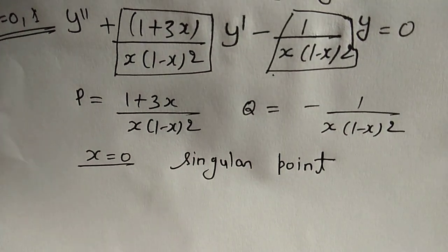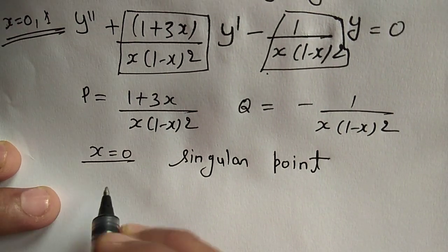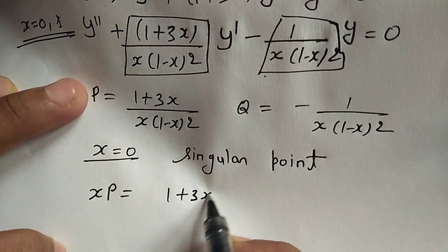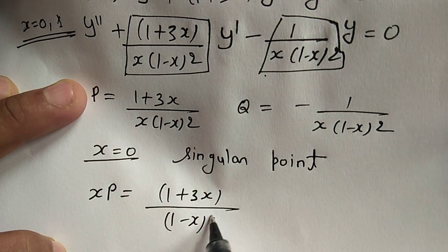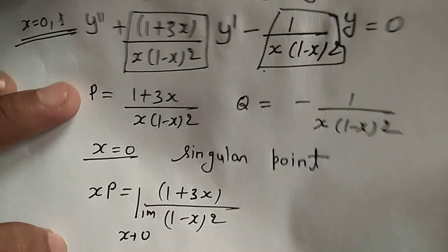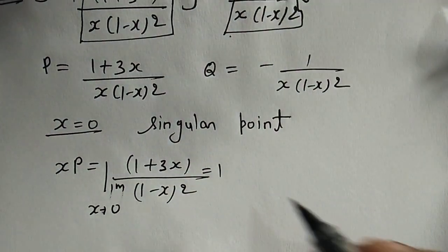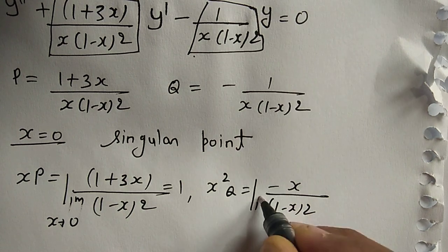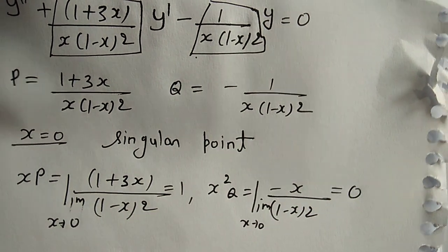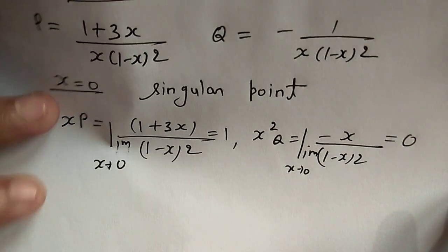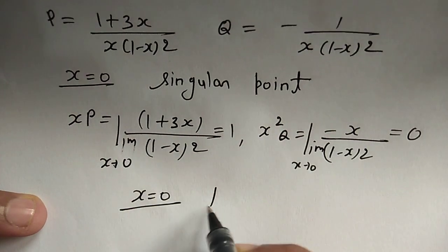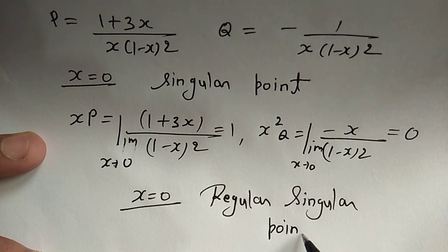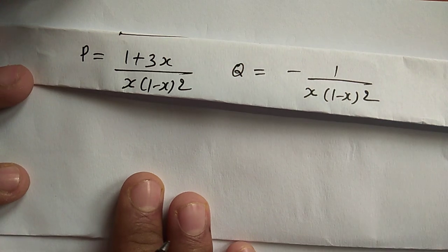Let us check whether x = 0 is a regular or irregular singular point. We compute the limit of x·P(x) as x → 0: x·P = (1 + 3x)/(1 − x)², and the limit as x → 0 equals 1, which exists. Next, the limit of x²·Q(x) as x → 0: x²·Q = −x/(1 − x)², and the limit as x → 0 equals 0, which also exists. Since both limits exist, x = 0 is a regular singular point.